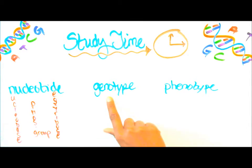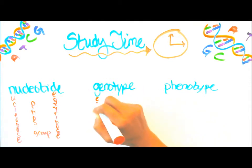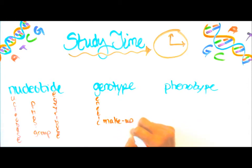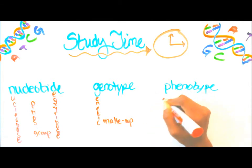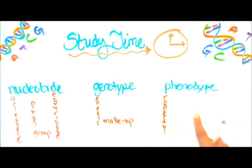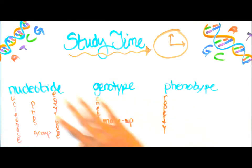Next we have genotype, and it's genetic makeup — we're going to use the G for genetic makeup. Next we have phenotype and we're going to use the P for property — it's the actual expressed properties. So that is phenotype, genotype, and nucleotide.